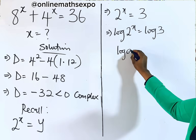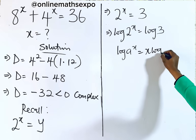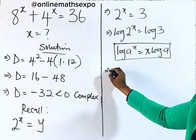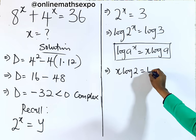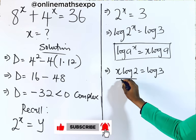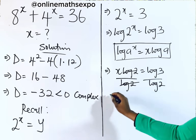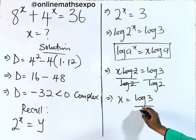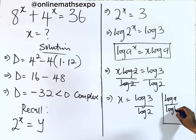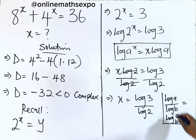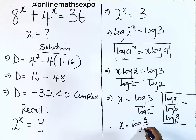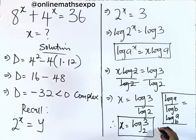Remember, for every log of a to the power of x, it equals x times log of a — the power multiplies the log. Applying this to the left side, we have x·log 2 equals log 3. To isolate x, we divide both sides by log 2, giving x equals log 3 divided by log 2. And since log a divided by log b equals log of a base b, we get x equals log of 3 base 2.